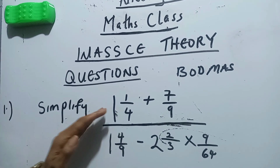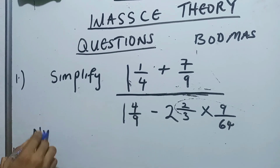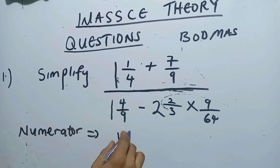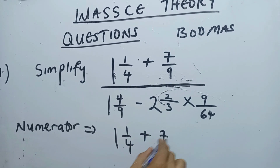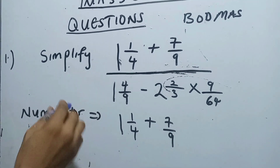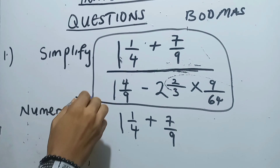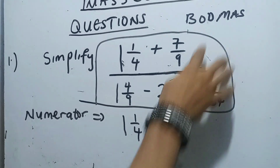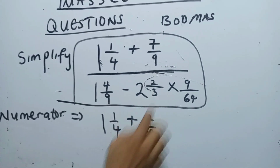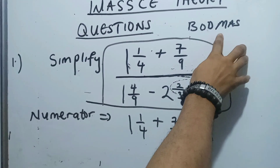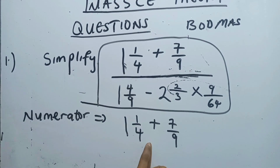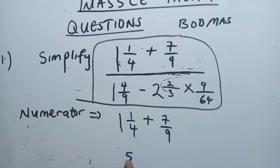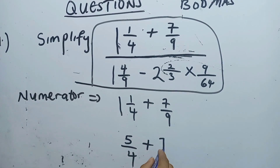I will solve for the numerator first. The numerator has one and a quarter plus seven over nine — that is 1 over 4 plus 7 over 9. I check the order: no brackets, no 'of', no division, no multiplication — there is addition. So I convert: 4 times 1 is 4, plus 1 is 5 over 4, and we have 7 over 9.